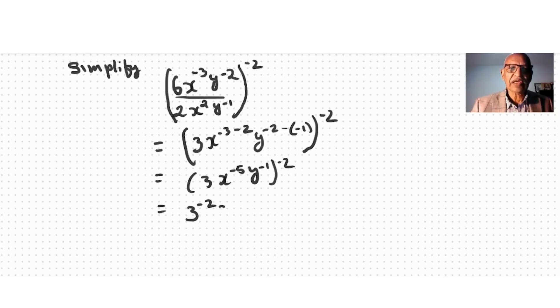x to the power of negative 5 times negative 2 is 10, y to the power of negative 1 times negative 2 is 2. Then we say it's a negative exponent, so I bring it down